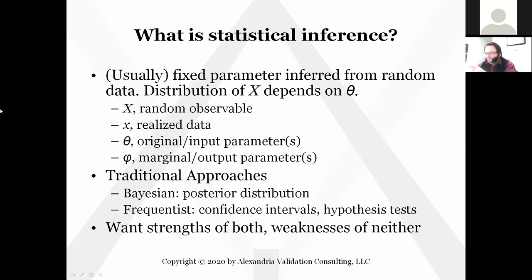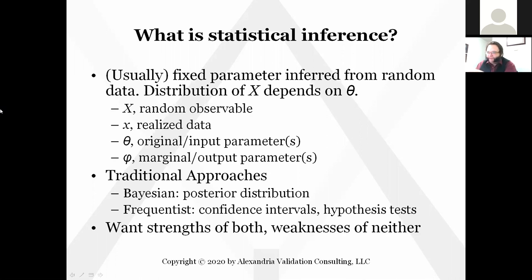What is statistical inference? We're usually inferring a fixed parameter from random data — you've got some parameter that determines the distribution for some random variable that you can observe, and you're trying to infer the parameter from the random observable. There are two big traditional approaches: Bayesian inference and frequentist inference, and they both have different weaknesses. Bayesian inference has some serious reliability issues in addition to being weak on interpretation. Frequentism is strong on those fronts, but its weakness is that it has really narrow ways of representing uncertainty in your inferred parameter.